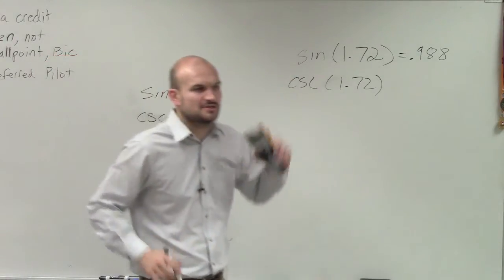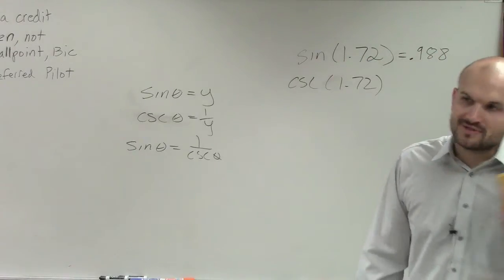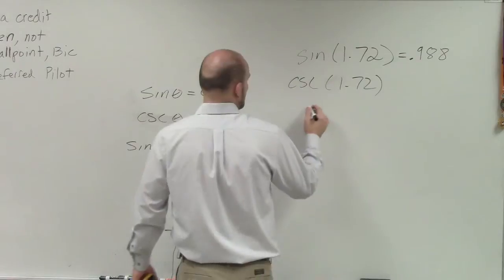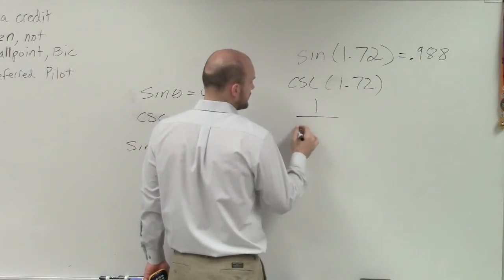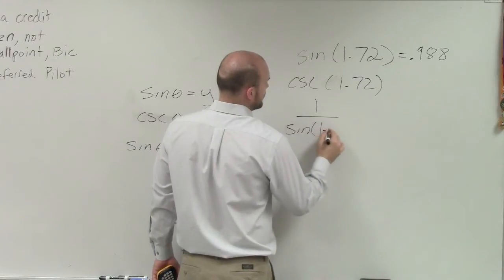If you guys are looking in your calculator, you're not going to see a cosecant function. Because cosecant is the reciprocal of the sine function. So to do a problem like this, what I simply need to do is type in 1 over the sine of 1.72.